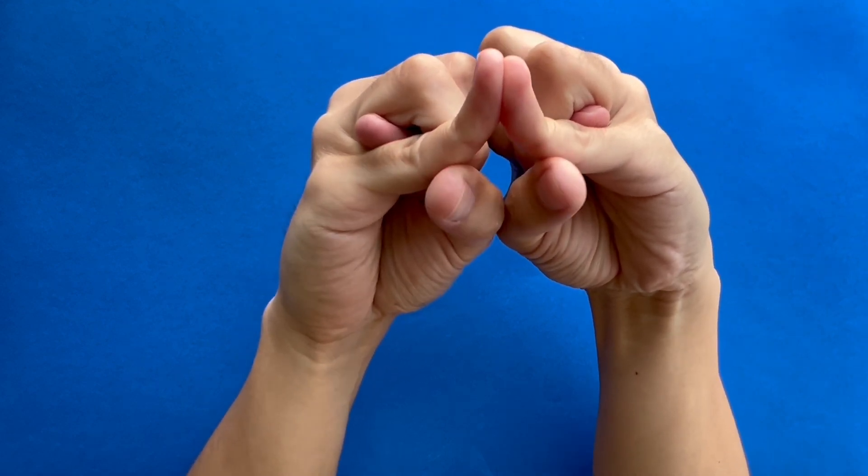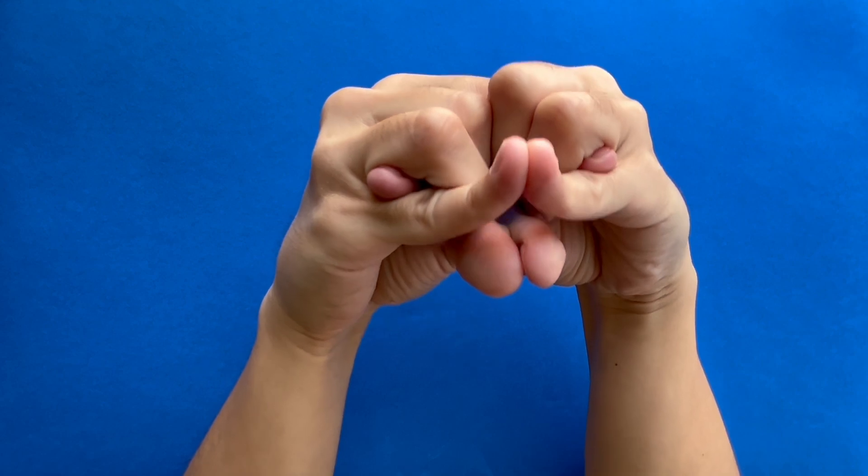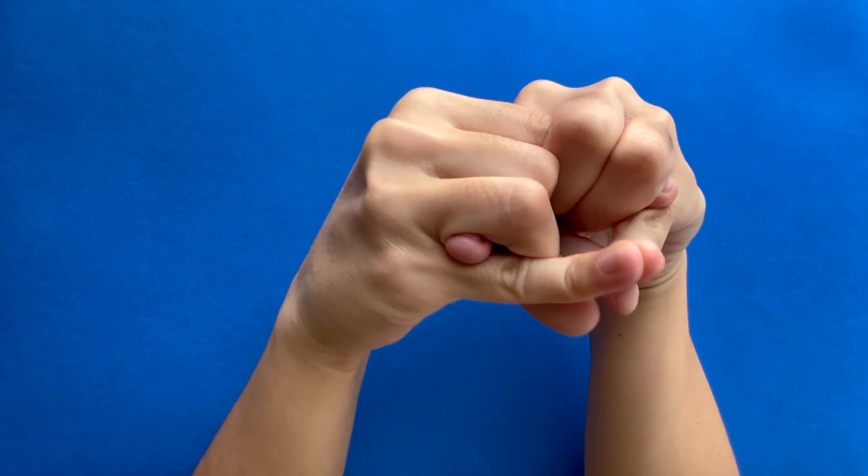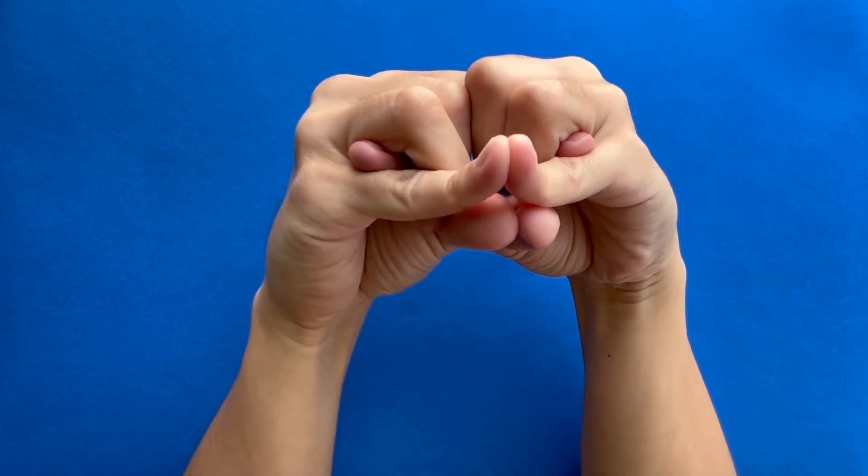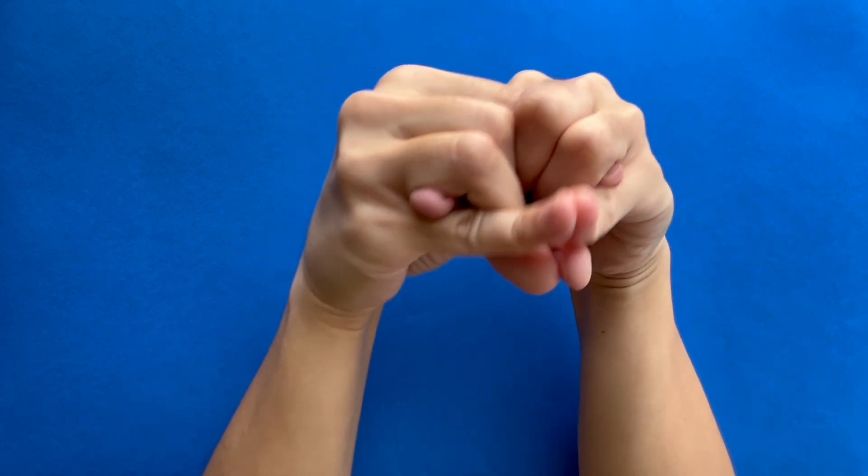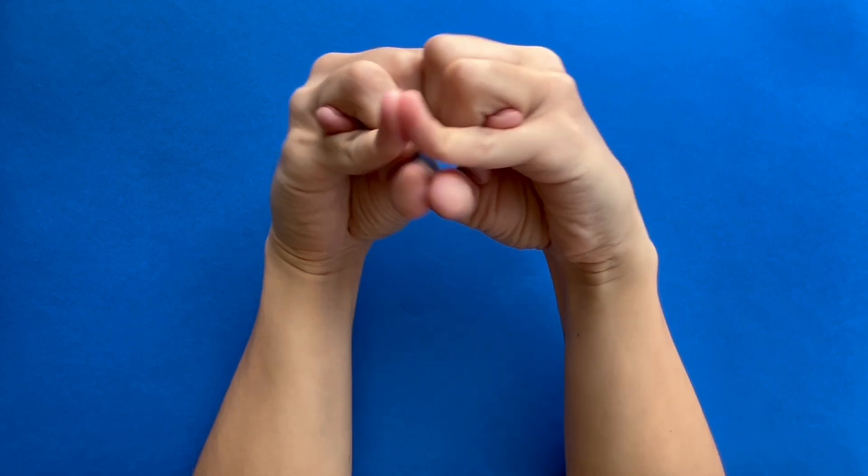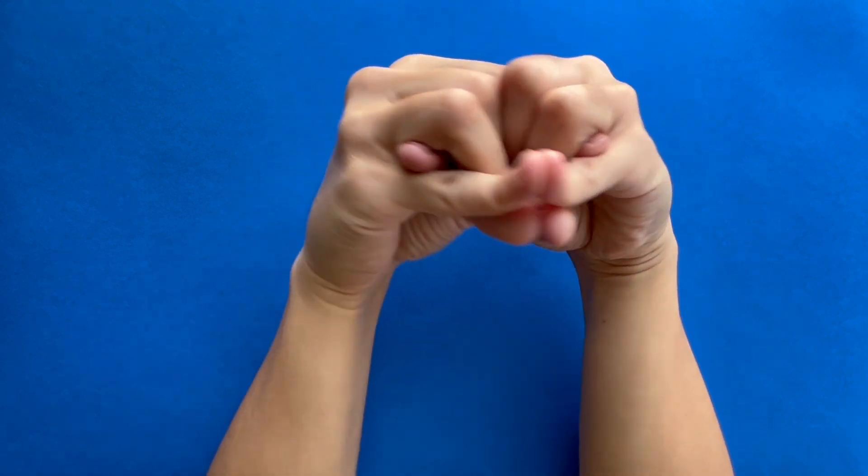Then tuck your thumbs under and touch your thumbs back to back—this forms the bottom of the beak. Move the pinkies up and down to open and close the mouth, and there you go, you've brought your very own swan puppet to life. If you feel like it looks like a duck or a goose, that is completely up to you.